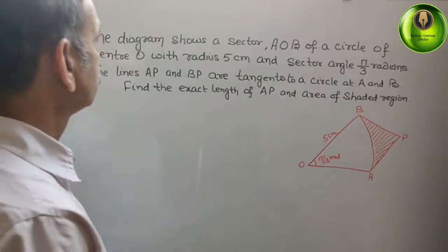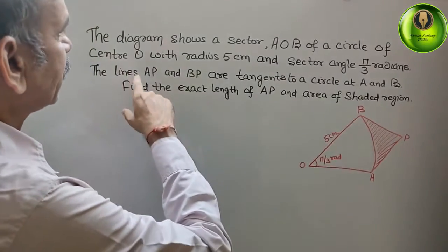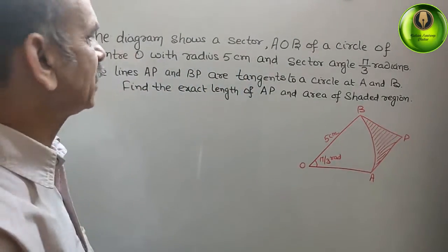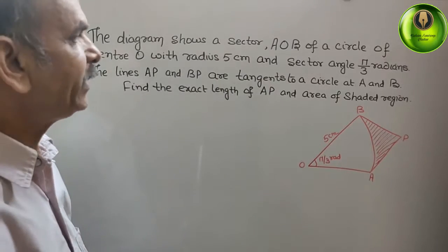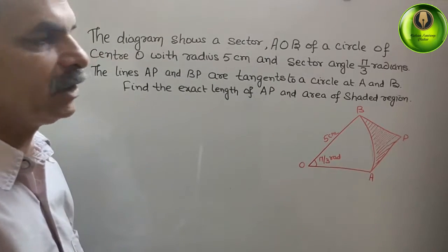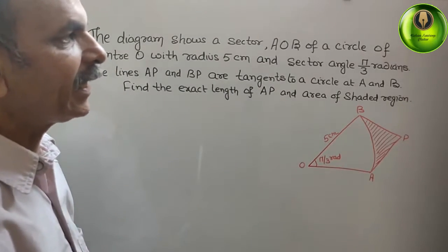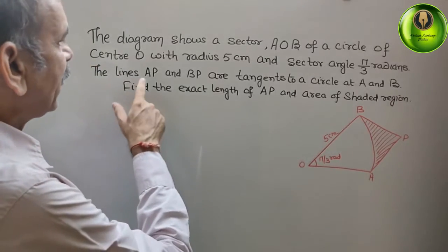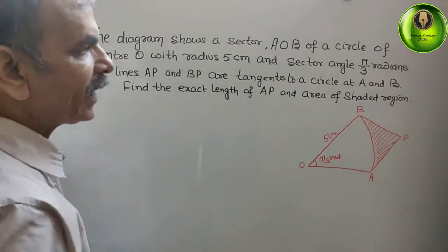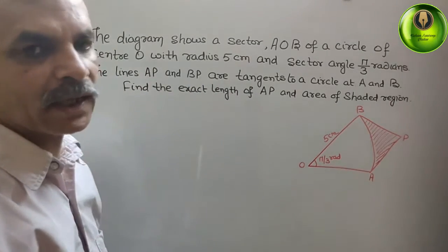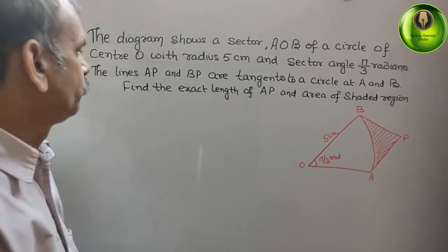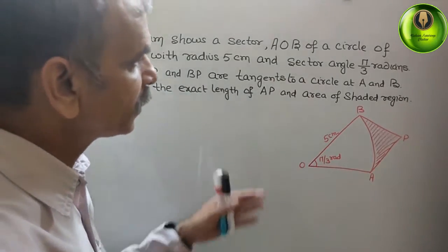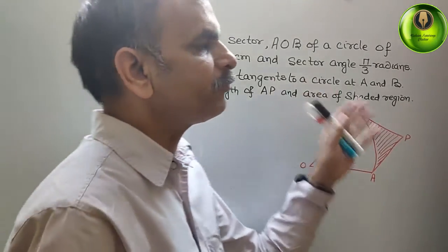The diagram shows a sector AOB of a circle with center O, radius 5 cm, and sector angle π/3 radians. The lines AP and BP are tangents to the circle at A and B. Find the exact length of AP and the area of the shaded region.